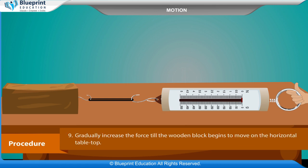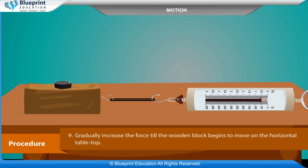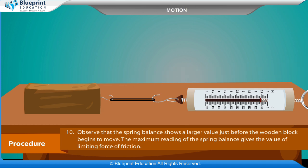Gradually increase the force till the wooden block begins to move on the horizontal table top. Observe that the spring balance shows a larger value just before the wooden block begins to move. The maximum reading of the spring balance gives the value of the limiting force of friction.